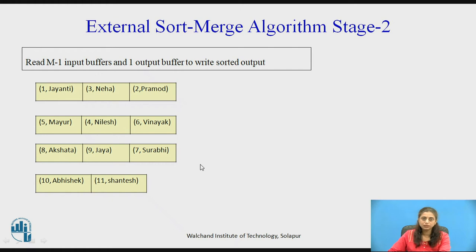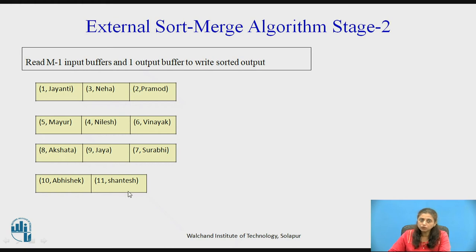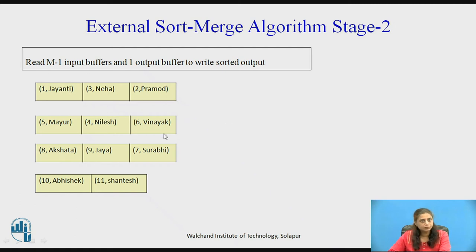Now we have to merge the 4 runs. In stage two, read M minus 1 input buffers and reserve 1 buffer for writing output. Here M is 3, so we read only 2 input buffers at a time. Since all 4 runs cannot fit at once, we take 2 at a time: first merge runs 1 and 2, then merge runs 3 and 4, and so on.